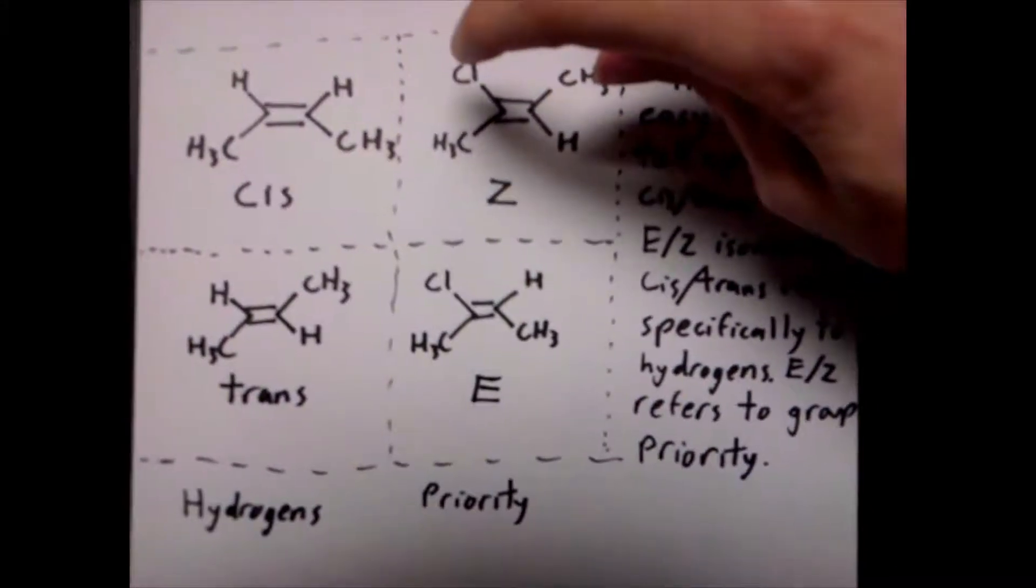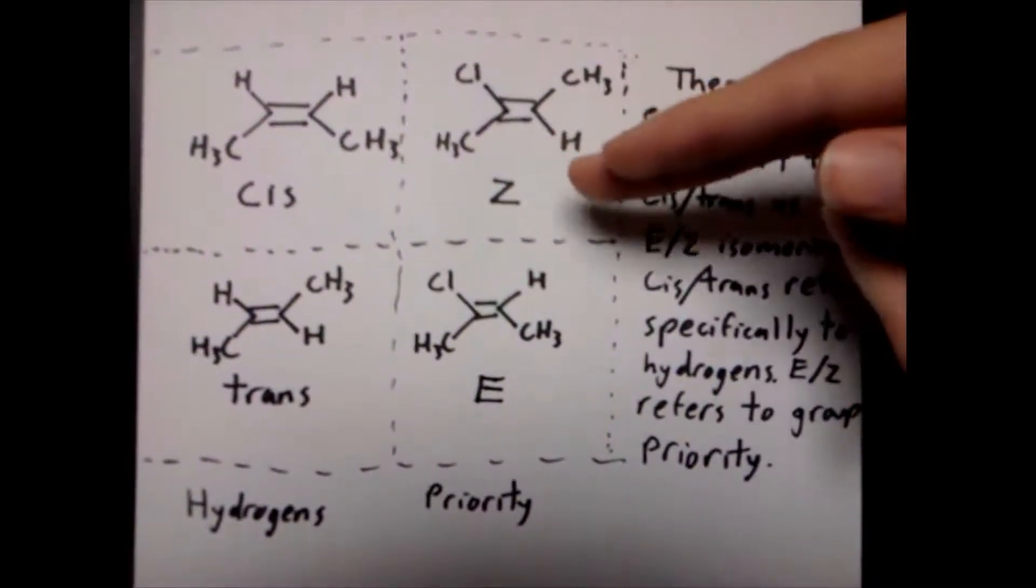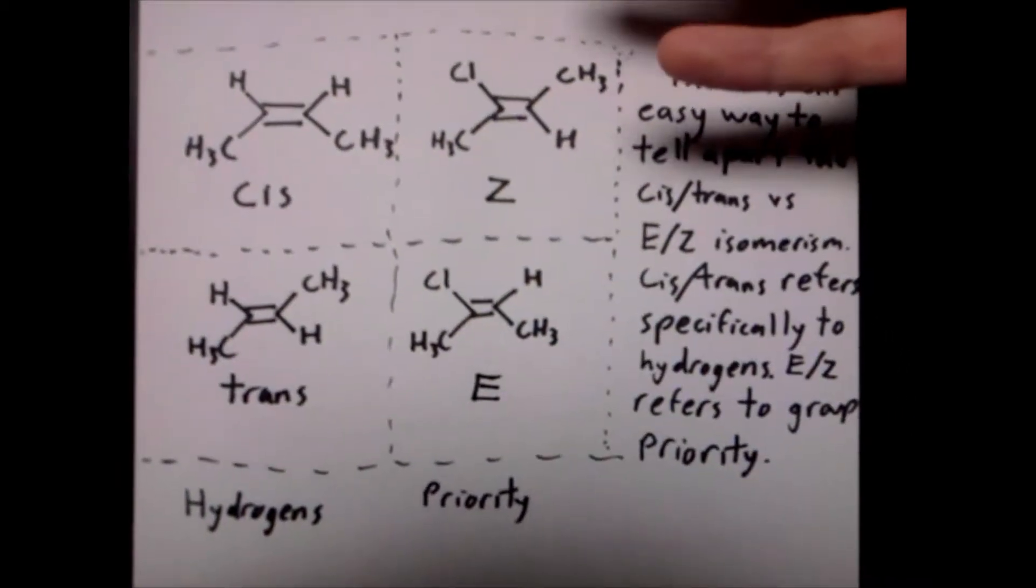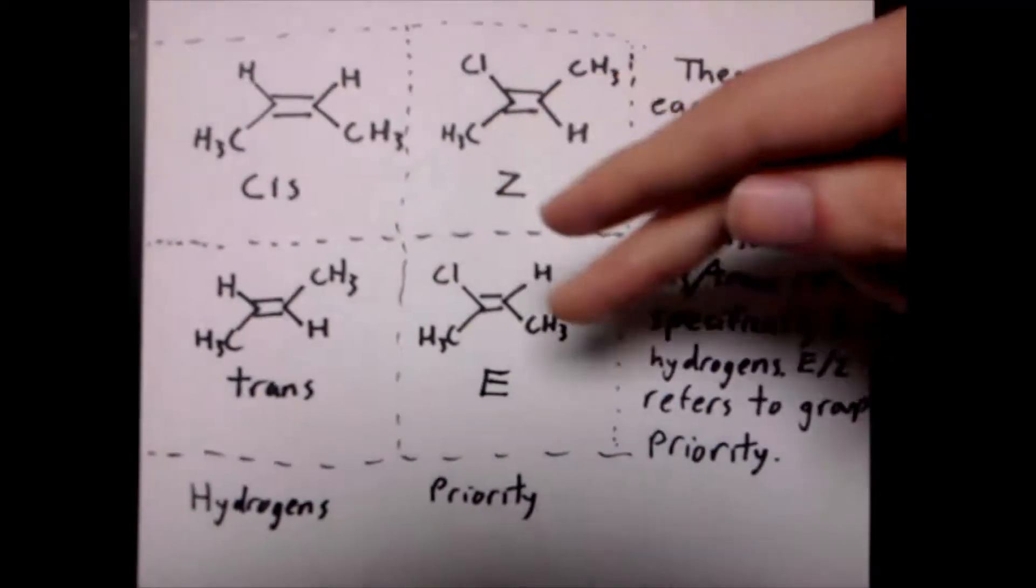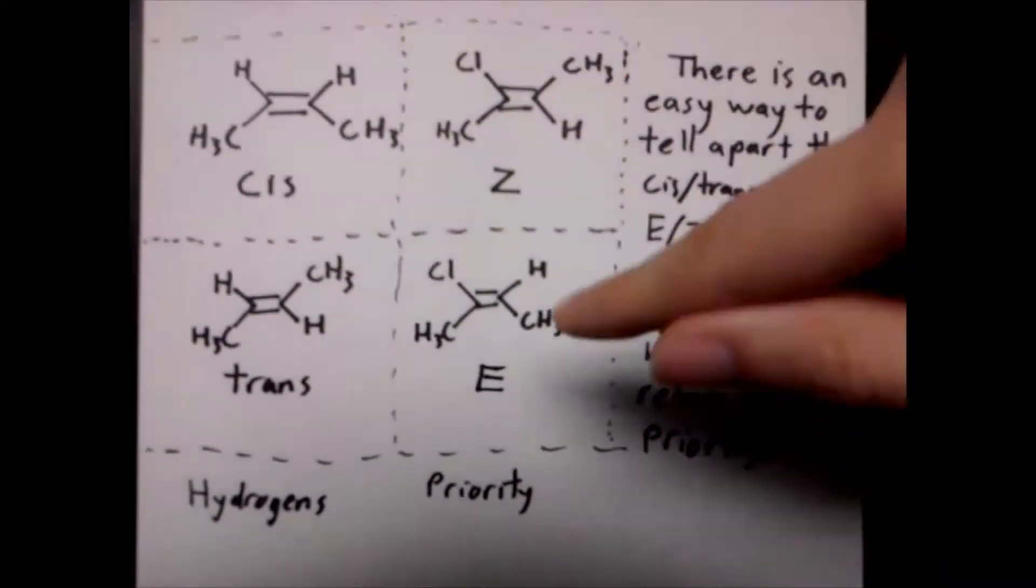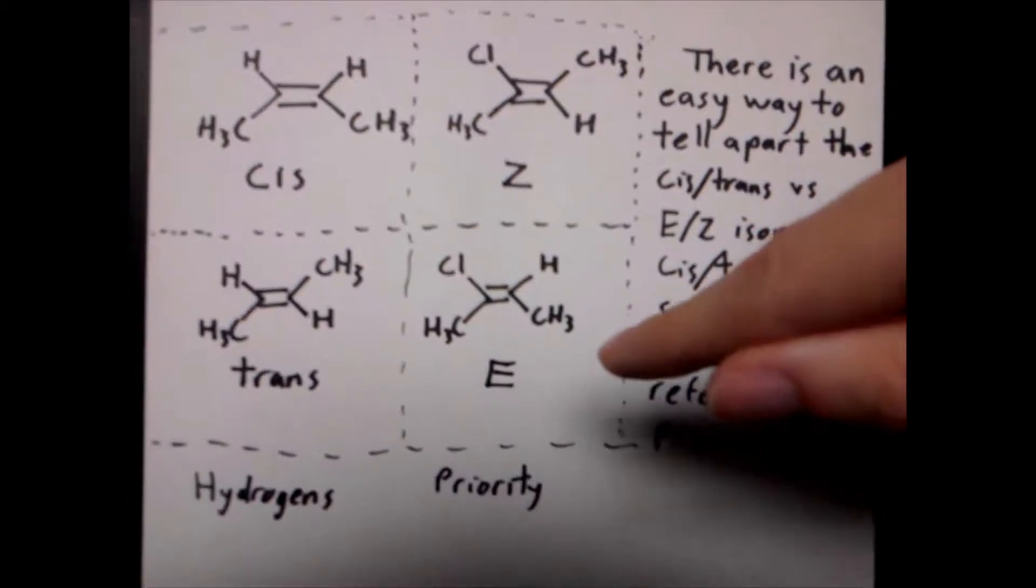And because they are on the same side of the molecule, this is designated as Z. On this one, the chlorine and the carbon are still the high priority groups, but now they're across from each other as opposed to being on the same side. Because of this, this is designated as E.